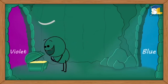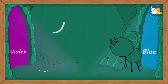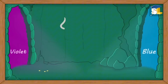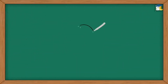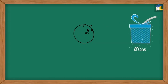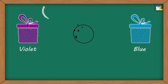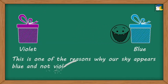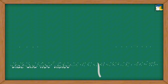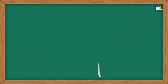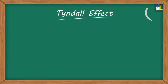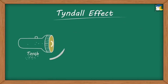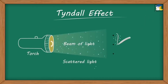So, let's see what happens. Do you think that our eyes have a natural inclination towards blue as compared to violet? This is one of the reasons why our sky appears blue and not violet. To understand this, first let us study about the Tyndall effect. Tyndall effect is a phenomenon in which a beam of light scatters on striking the particles present in its path.